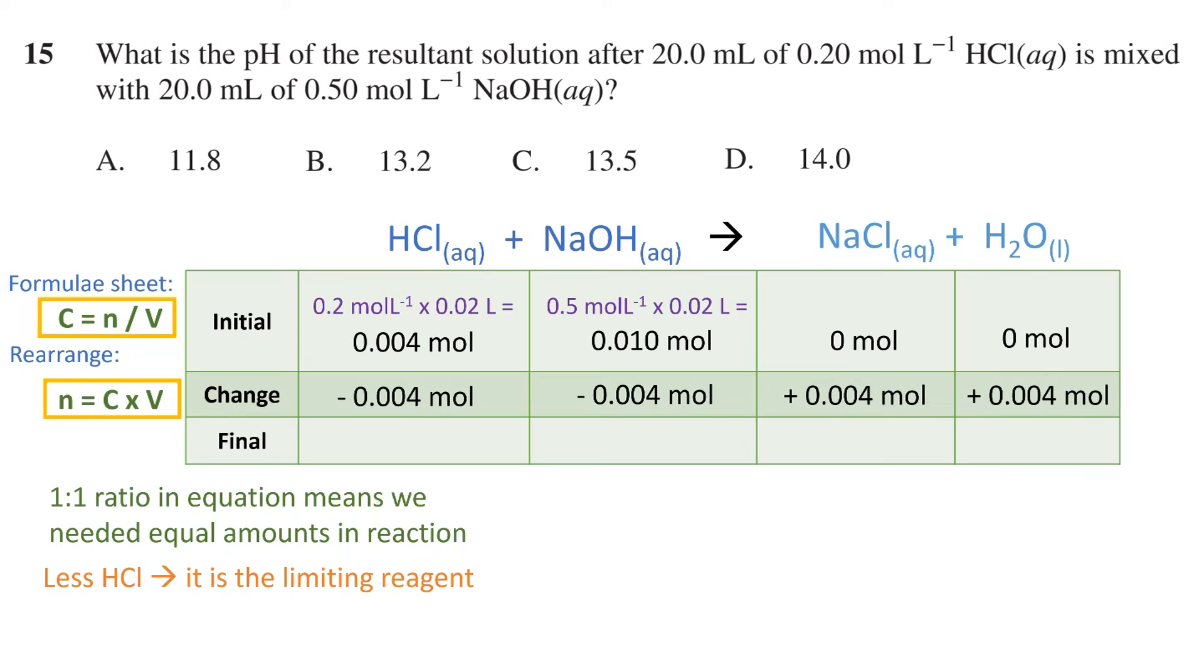If we combine the initial with the change, we get to see the final number of each species. HCl gets used up, as 0.004 minus 0.004 is just 0. Next, the initial 0.01 moles of NaOH is reduced by 0.004 moles, leaving behind 0.006 moles, while the number of moles for NaCl and H2O is just 0.004.